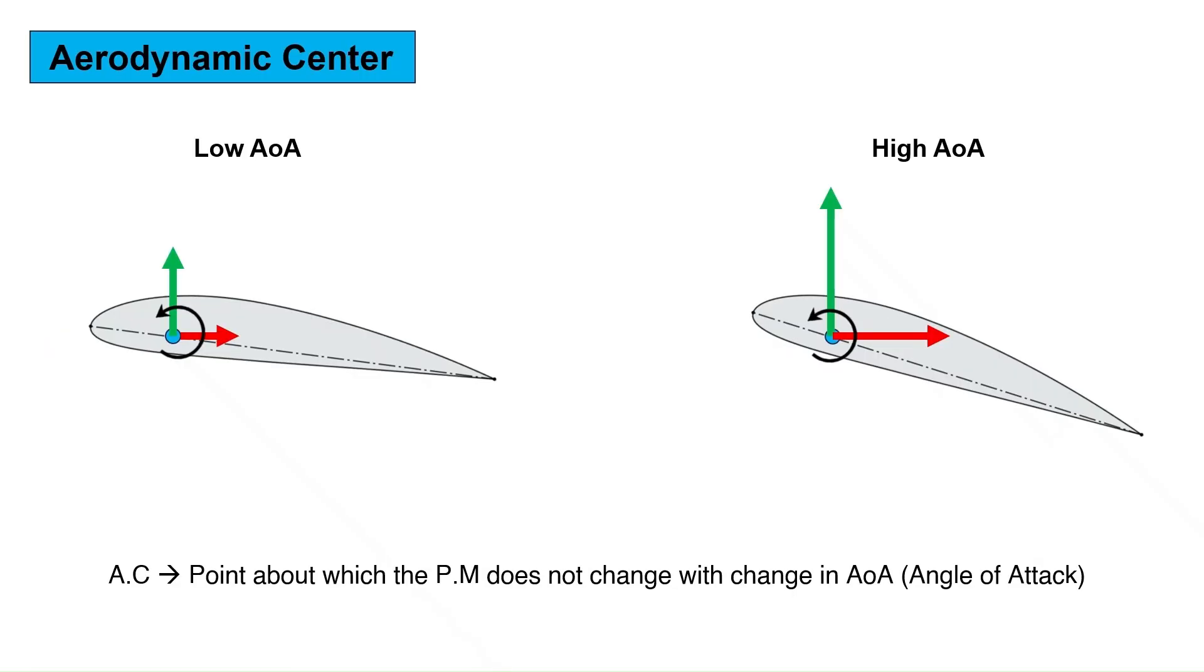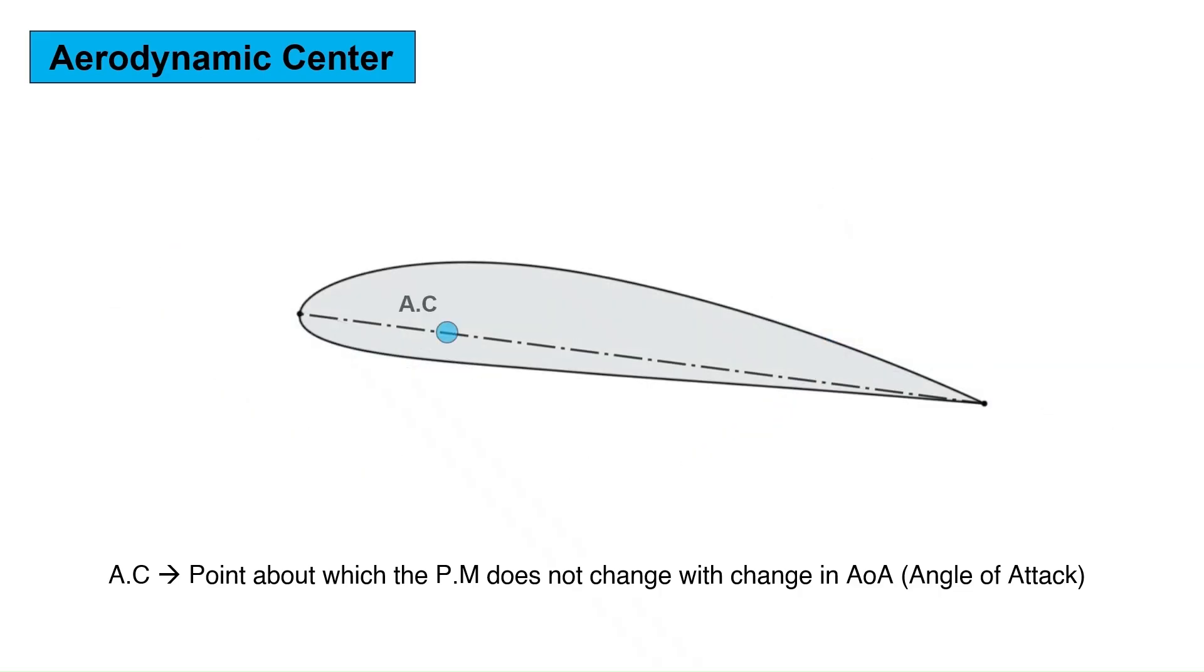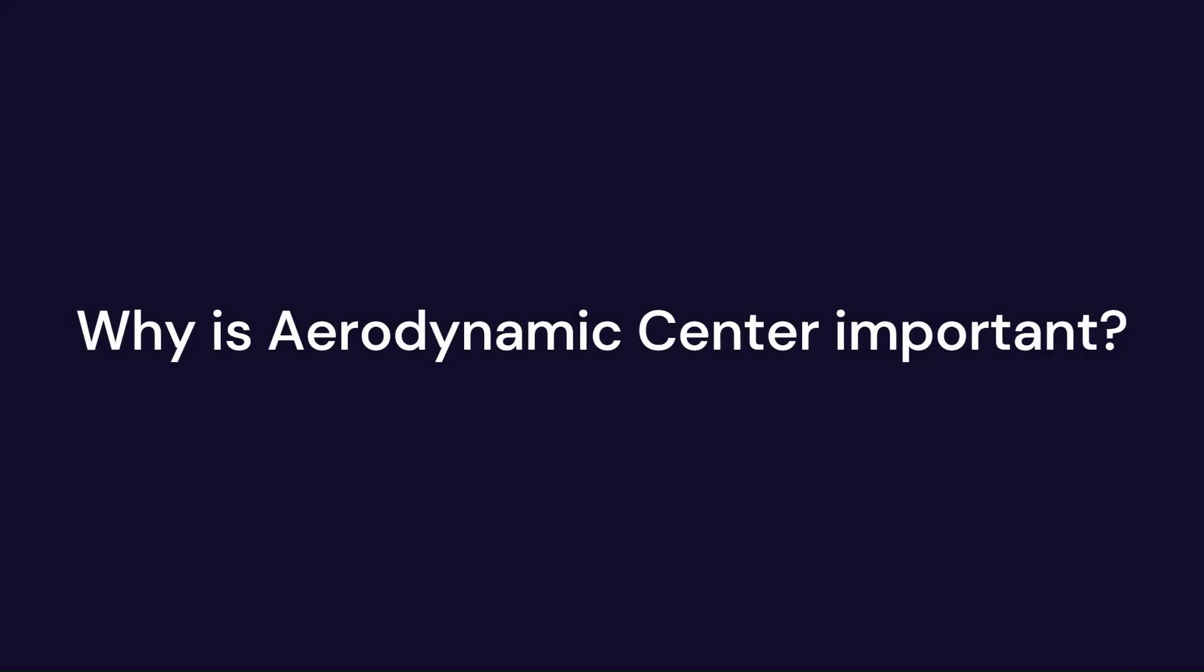The aerodynamic center is defined as a point on the cord about which the pitching moment does not change with angle of attack. Another way of looking at it is that the aerodynamic center is the point on the cord where the lift is considered to act.